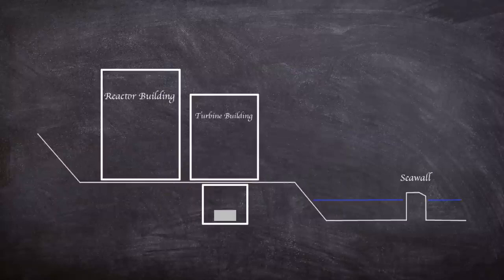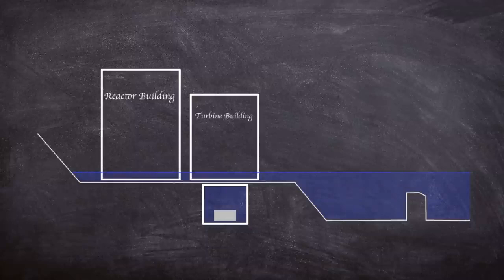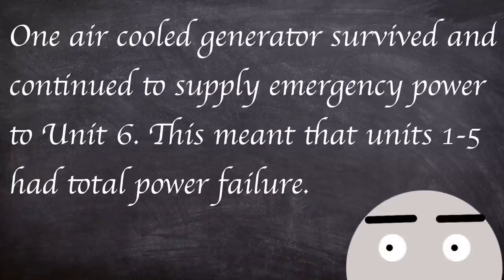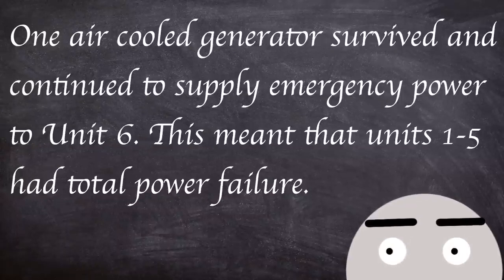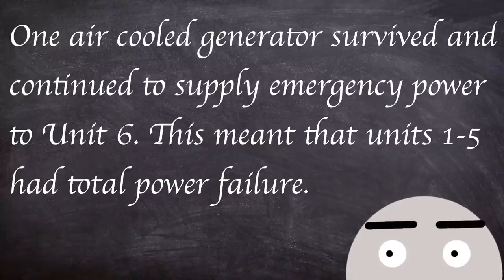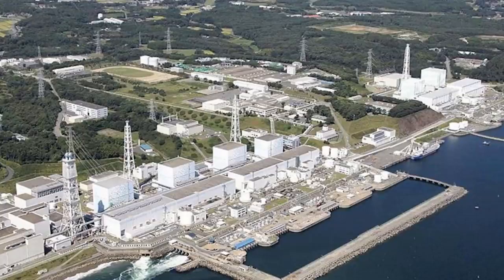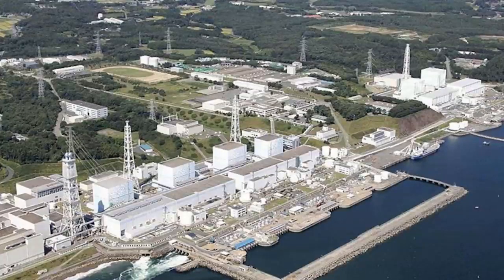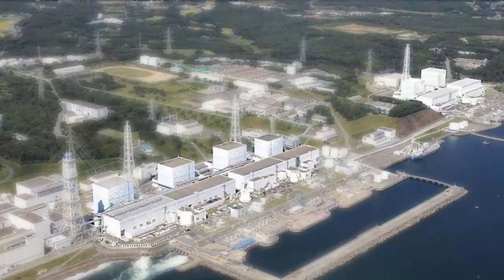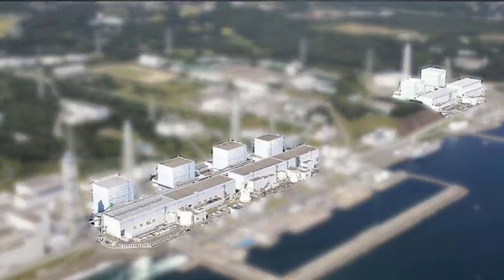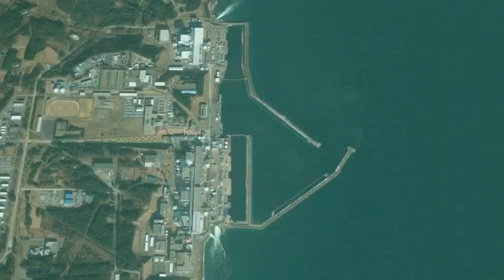The flooding water made its way into all buildings including the vital basements that housed the generators and their associated electrical equipment. This resulted in the loss of emergency AC power. One air-cooled generator survived and continued to supply emergency power to unit 6. This meant however that units 1 to 5 had total power failure. The power station was designed to be able to work off DC batteries for up to 8 hours in the event of the loss of AC power generation. However, some of these systems were also affected by the flooding inundating the functional DC systems. Power started to dwindle in units 1, 2 and 4, 15 minutes post-flood, due to the loss of all AC and DC power.